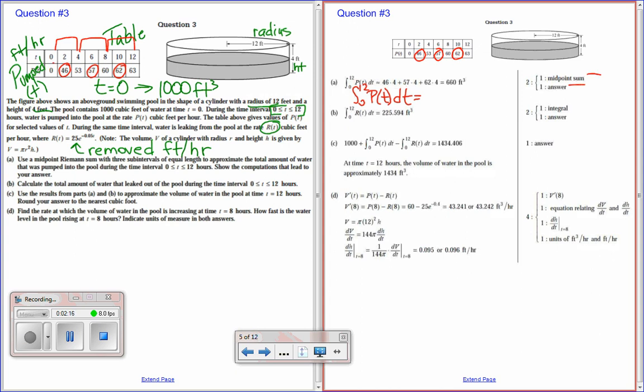Next is calculate the total amount of water that leaked out of the pool. Now here we're not given a table, but we're given a function. So to find the total amount, you take the integral of the rate of change. Now this is just a matter of putting that into your calculator correctly. Now remember also, whenever we use calculators, we always, at the very end, round it off to three decimal places. So this is how much is being removed. And this is being pumped in. So you can see more is being pumped in than it's being removed, which is a good thing.